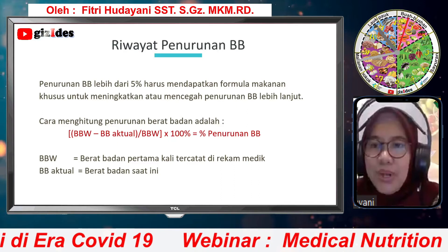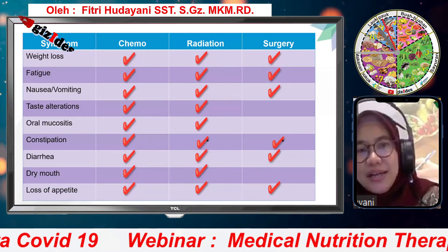Kemudian riwayat penurunan berat badan. Jadi pada pasien kanker, pengkajiannya bukan cuma sekedar recall 24 jam, kemudian kebiasaan food preference, kebiasaan makan, juga terkait dengan kondisi fisik dan klinisnya. Supaya pada saat kita melakukan perencanaan makanan, makanan yang direncanakan betul-betul bisa diterima oleh pasien, daya terimanya baik. Ini adalah gambaran dari gejala-gejala yang pada umumnya terjadi pada pasien-pasien kita dengan terapi, dari mulai adanya penurunan berat badan, lemas, mual, muntah, sampai hilangnya nafsu makan.